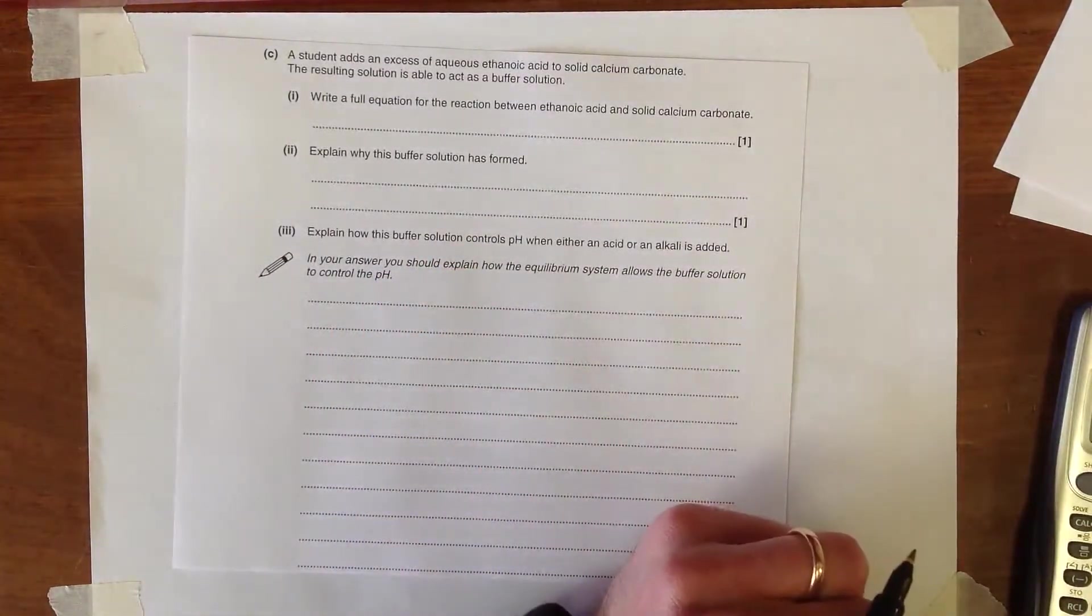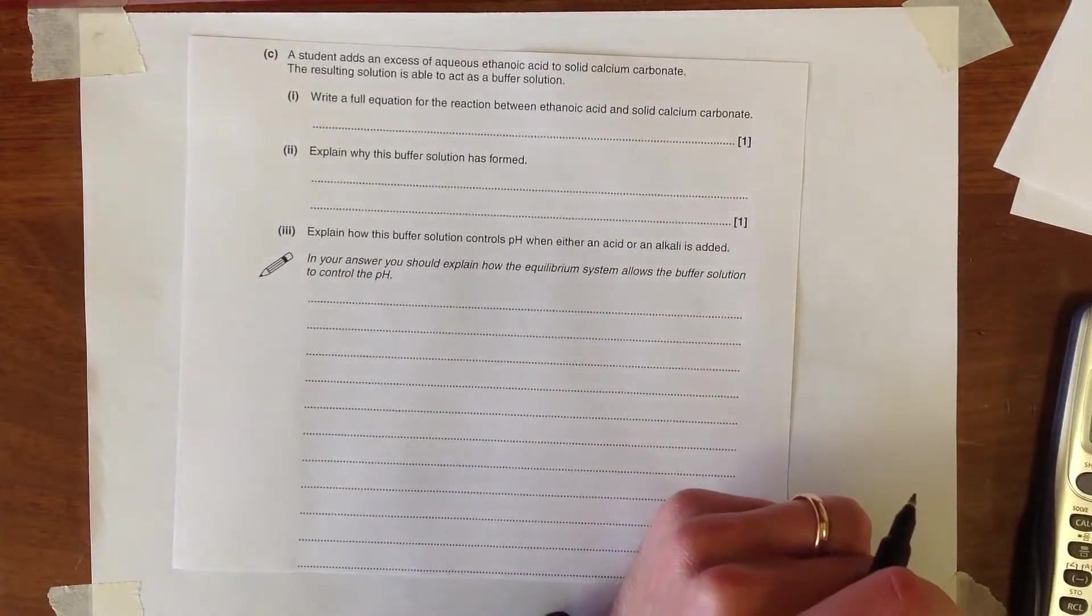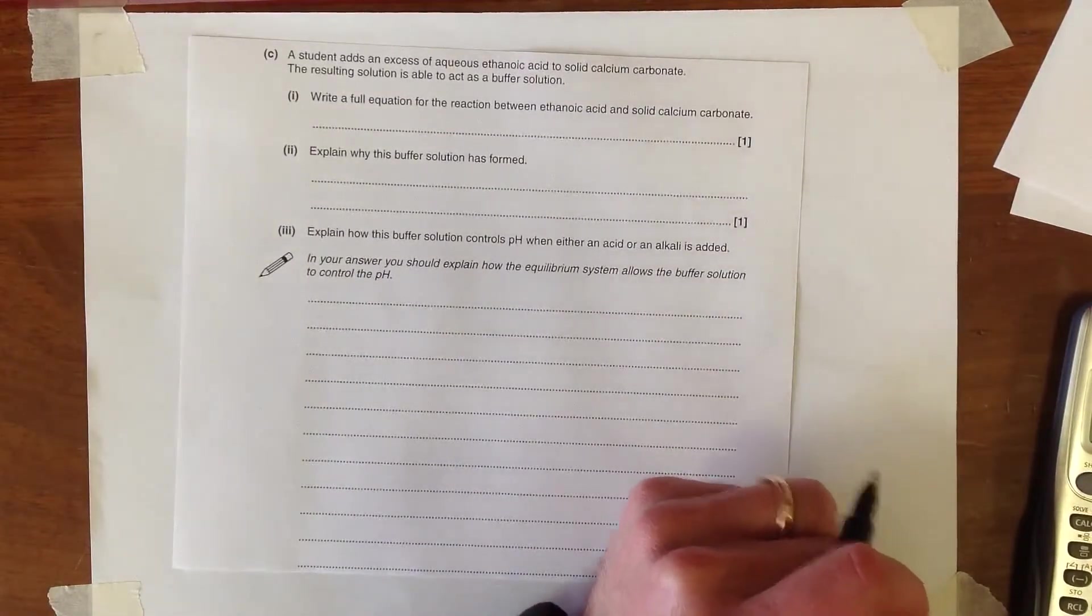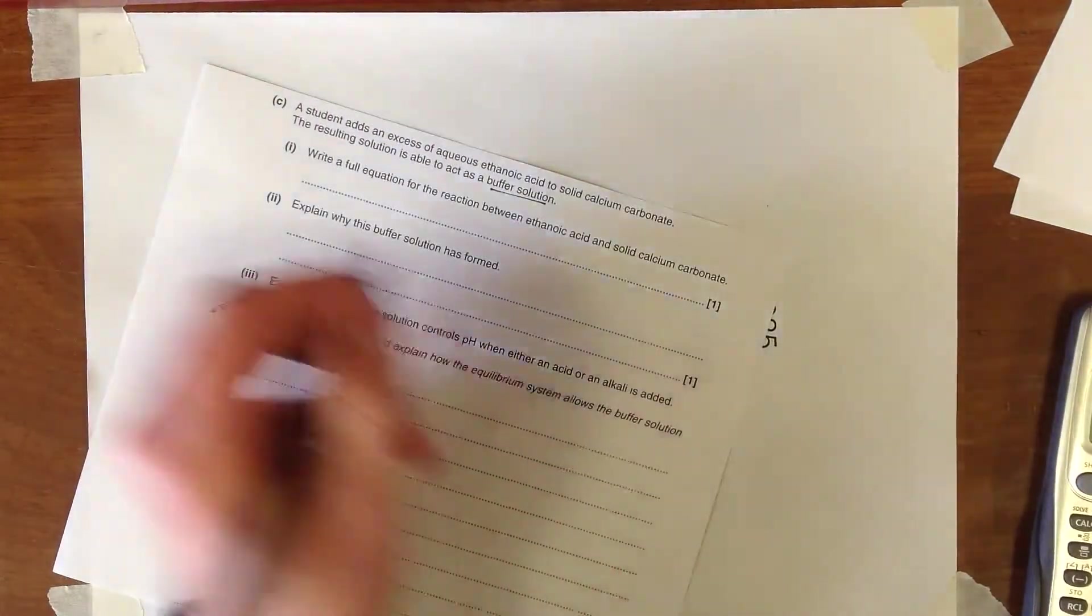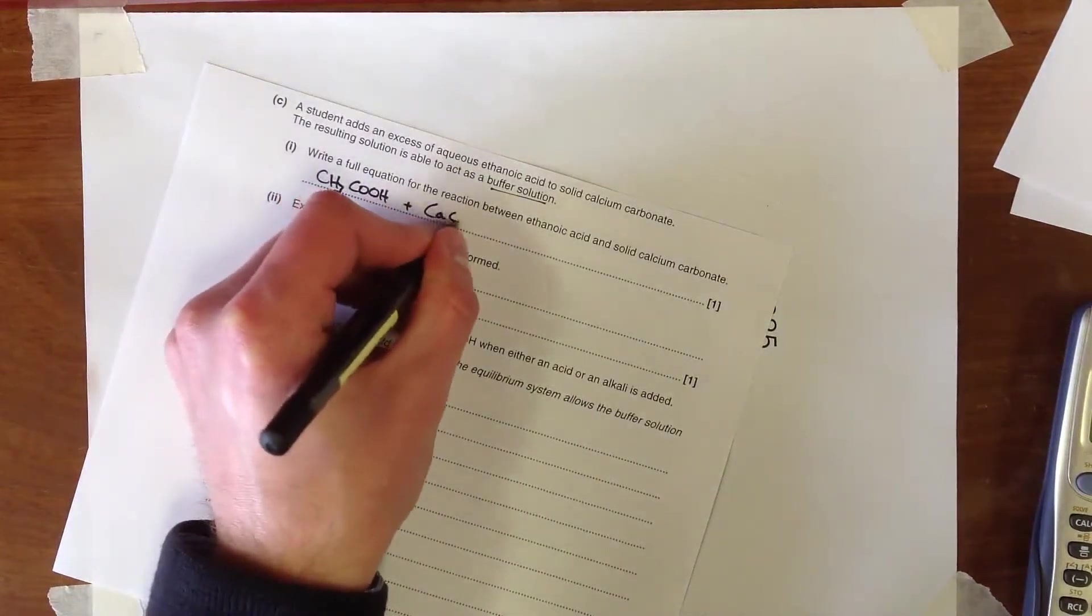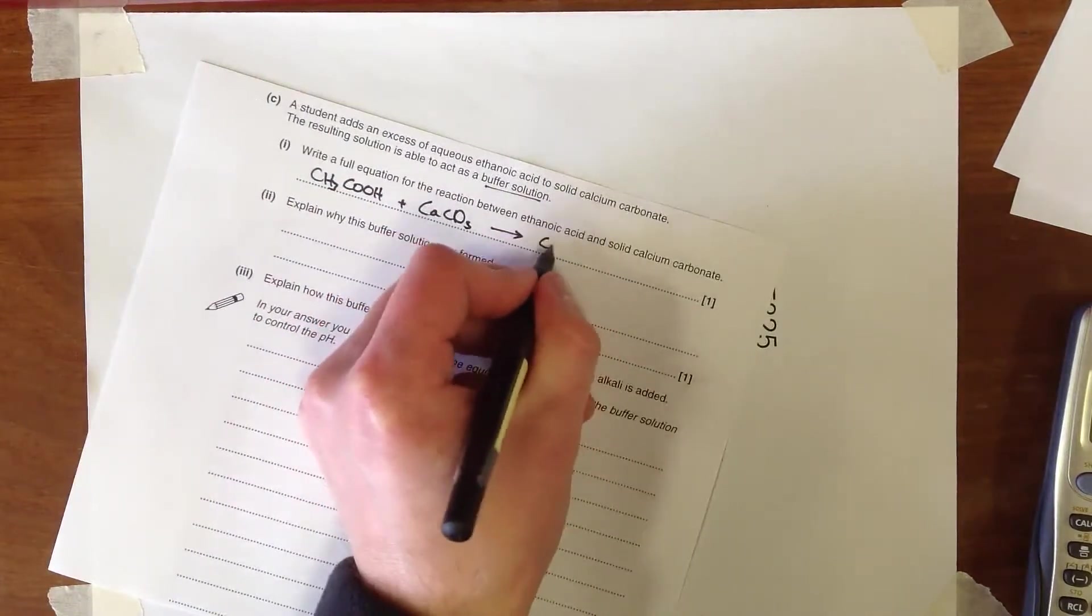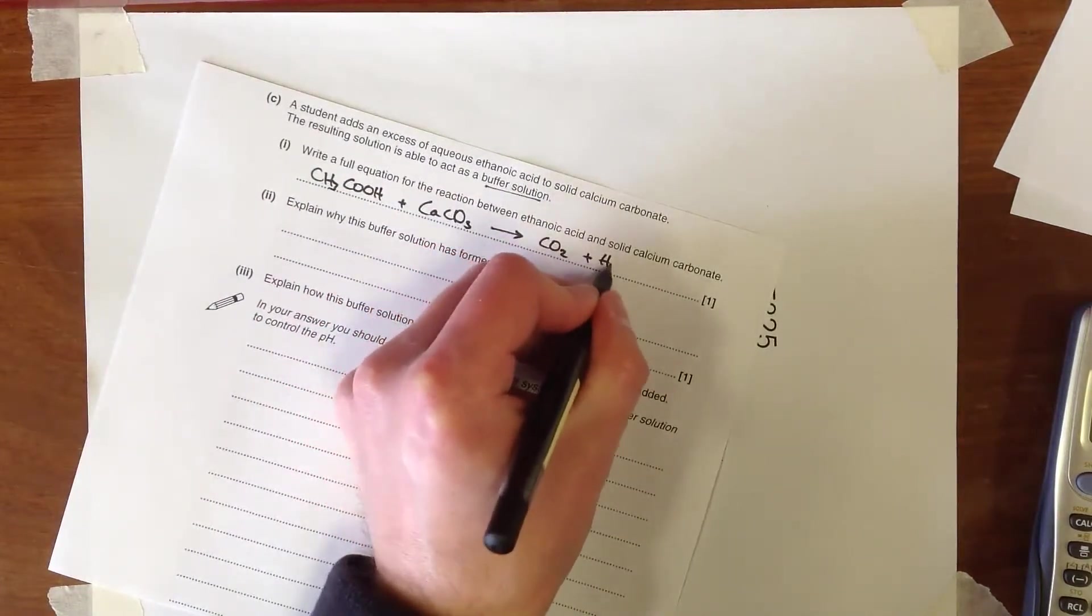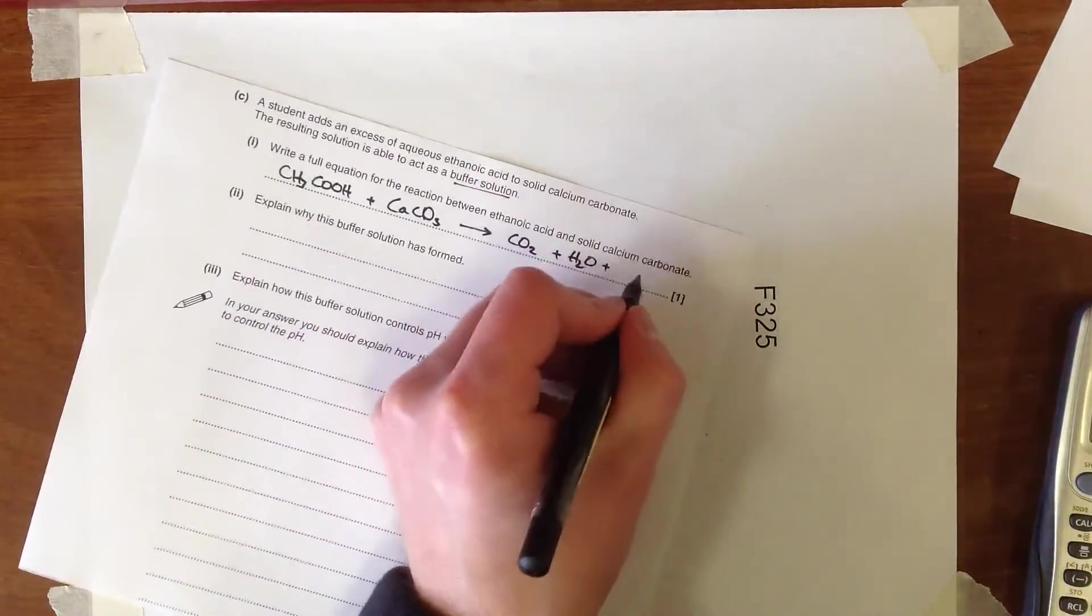The second part of this question is all about adding an excess of aqueous ethanoic acid to solid calcium carbonate. And that is acting as a buffer solution. So first off, it's asked us for an equation for the reaction. So we've got CH3COOH reacting with calcium carbonate. And acids react with carbonates to produce CO2 and water. And then in addition, there's going to be the calcium ethanoate salt here.